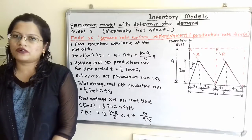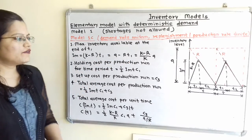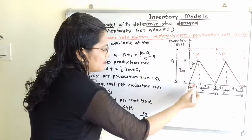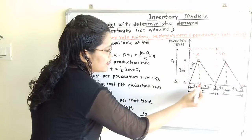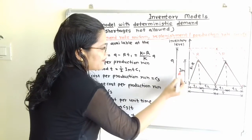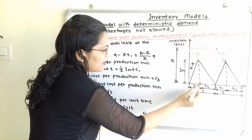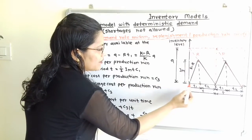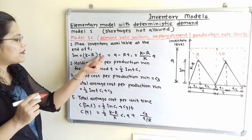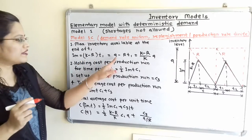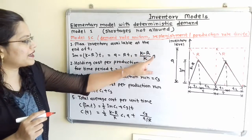Moving to the important formulae. The maximum inventory IM at the end of T1 can be observed from the triangle in the diagram: IM equals (K minus R) multiplied by T1. This can also be written as K·T1 minus R·T1, which equals Q minus R·T1, or alternatively as (K minus R)/K multiplied by Q.